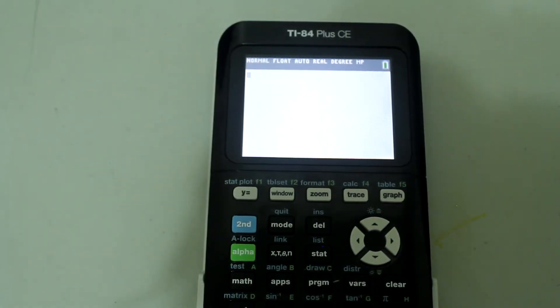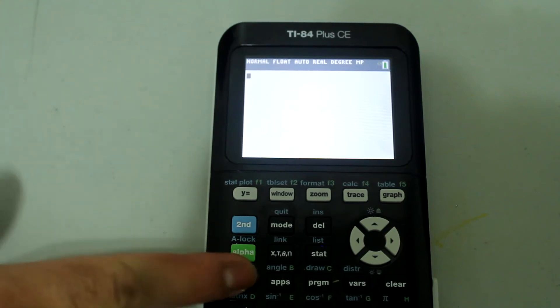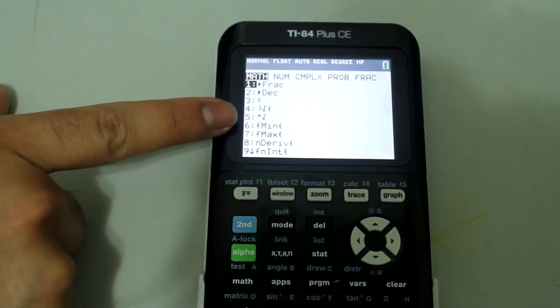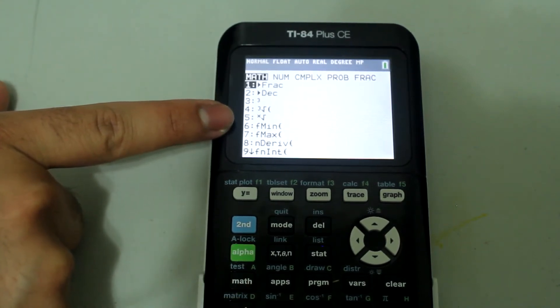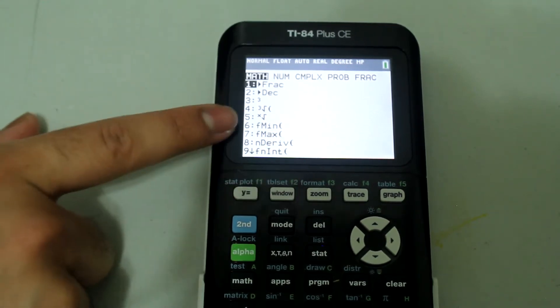Let's say we want to find the fourth root of 256. Press the math button and then notice that the fifth option is a radical with X as an index. I'm going to select that option by pressing number five on the number pad.